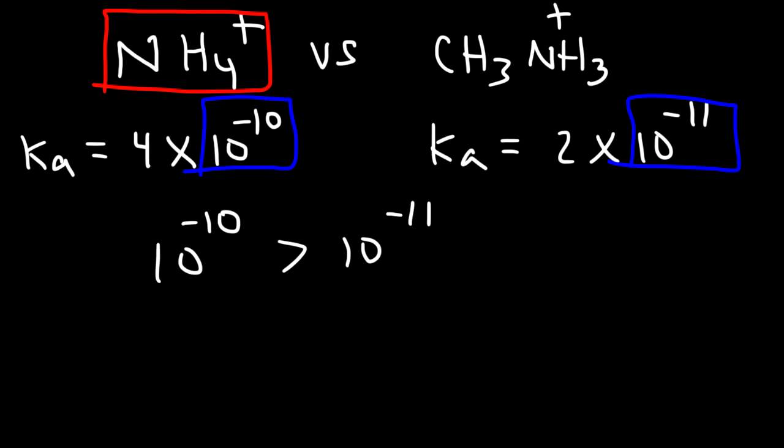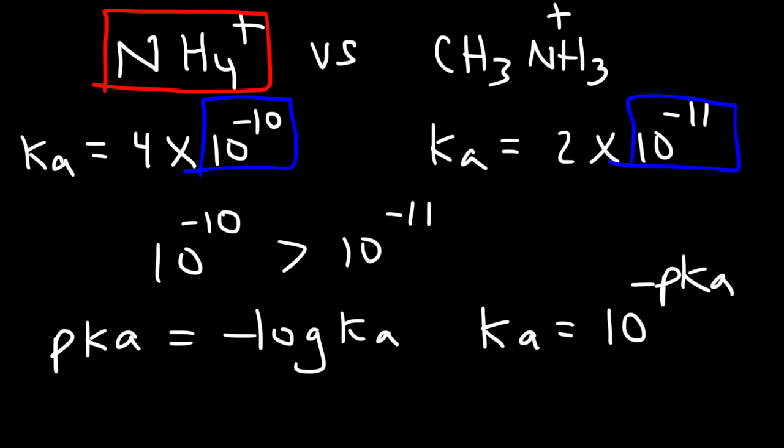And here are two equations that you may need to know. pKa is equal to the negative log of the Ka value. And if you need to find Ka from pKa, the Ka is 10 raised to the negative pKa. You might find those equations useful. So that's it for this video. Thanks for watching.